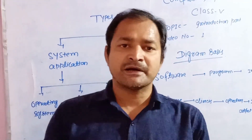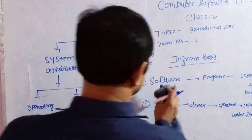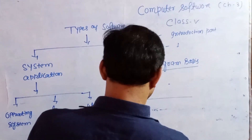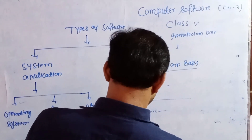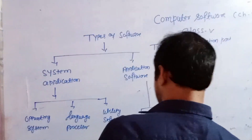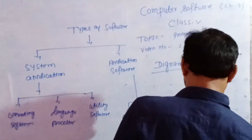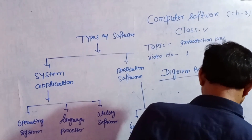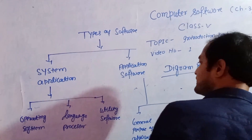Application software has two parts. First part: general purpose application software. Second part: specific purpose application software. This is the part of the software.